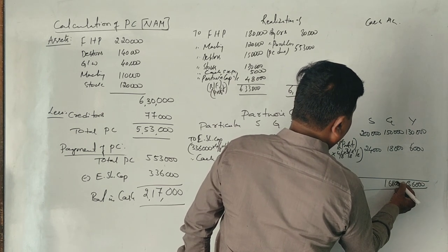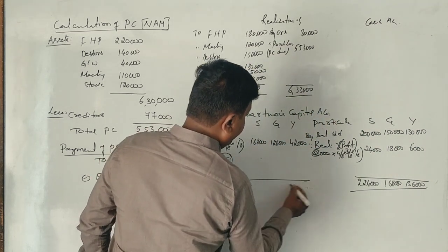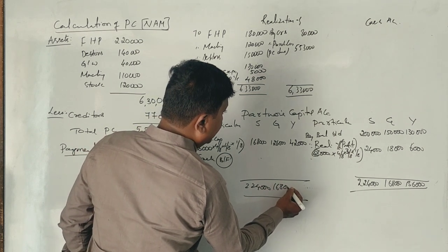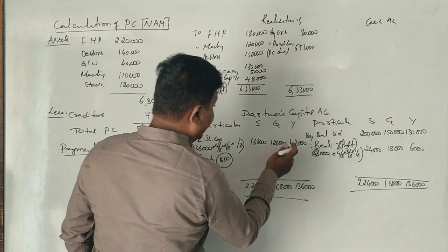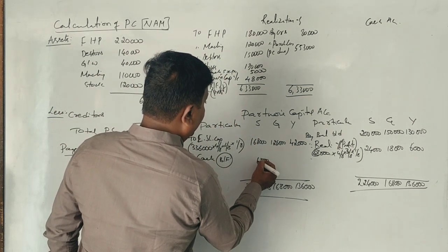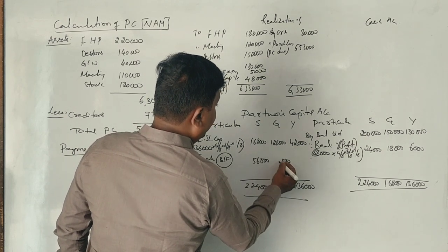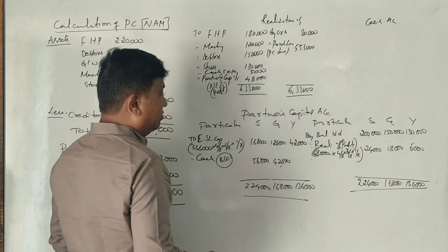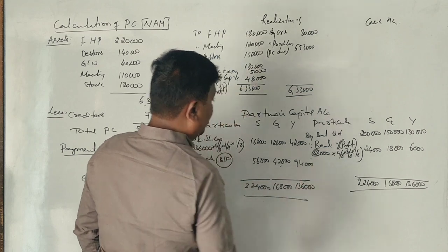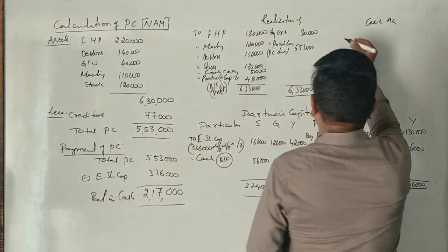In the capital accounts: 1,68,000 plus 26,500 equals 2,24,000 for Siri. 1,26,000 plus 19,875 equals 1,69,875 for Giri. 42,000 plus 6,625 equals 1,36,625 for Yadav. This completes the cash account entries.